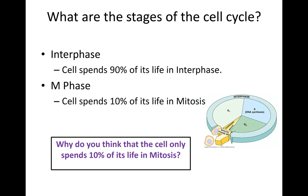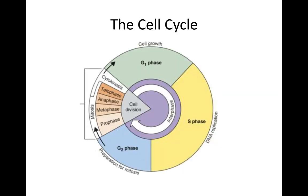Why does the cell only spend 10% of its life in mitosis? It's because in interphase the cell is growing and doing its daily functions, and that's really important most of the time. The cell cycle is a repeating cycle: interphase is the main step at 90% of the cell's life, and then mitosis — with all its little subdivisions — is a very quick process at just 10%.